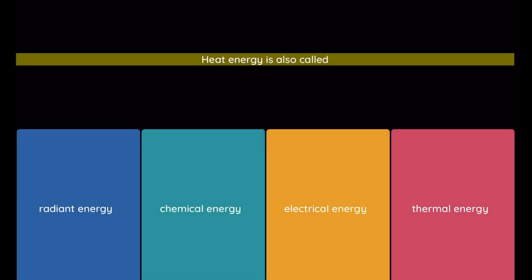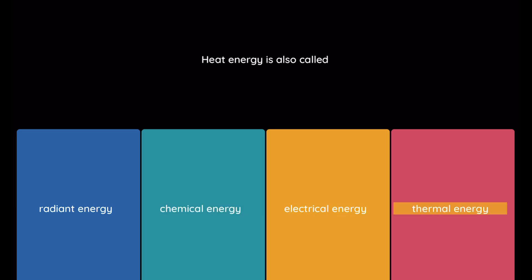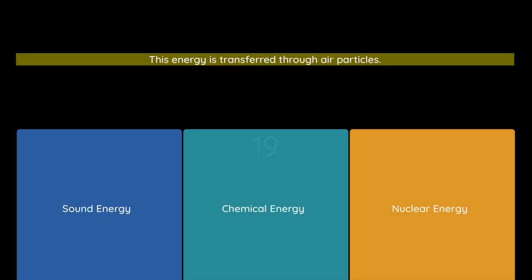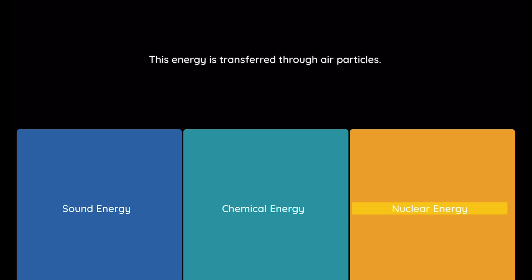Question: Heat energy is also called. Option 1: radiant energy. Option 2: chemical energy. Option 3: electrical energy. Option 4: thermal energy. Question: This energy is transferred through air particles. Option 1: sound energy. Option 2: chemical energy. Option 3: nuclear energy.